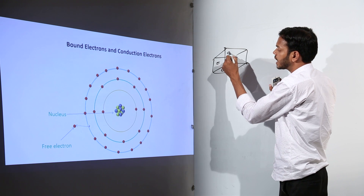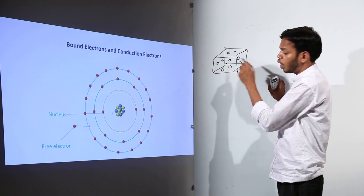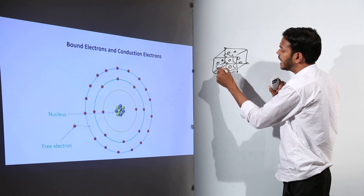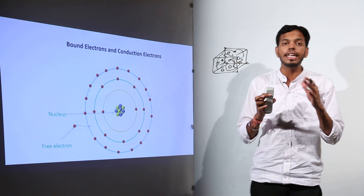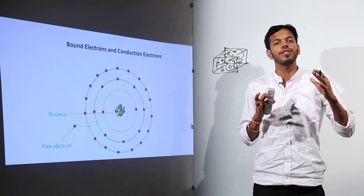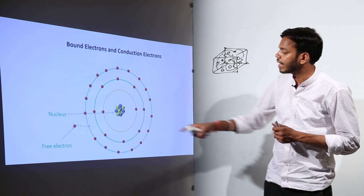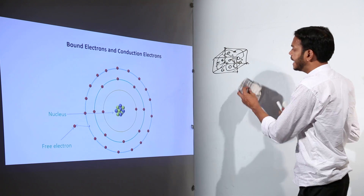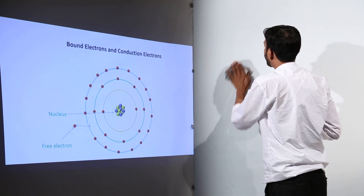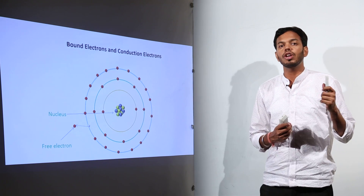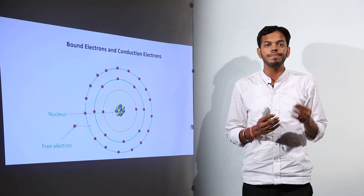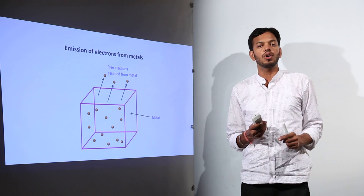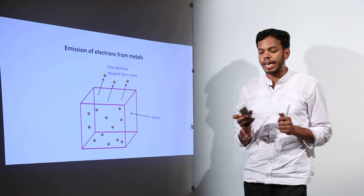These free or conduction electrons are free to move anywhere inside the solid structure. They are not leaving the solid as of now, but they are free to move anywhere inside — that is why they are called free electrons. So now you have the idea of how free electrons exist inside the solid.